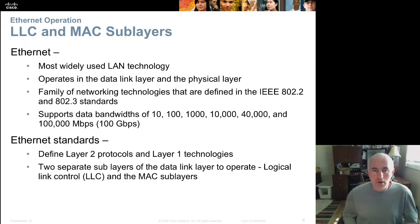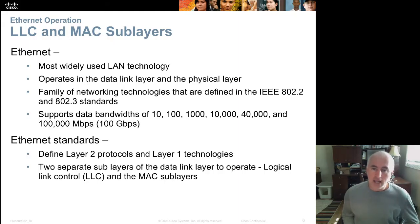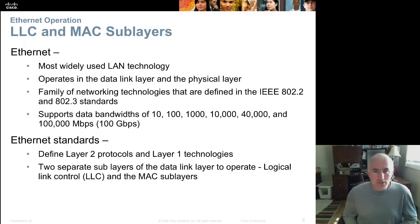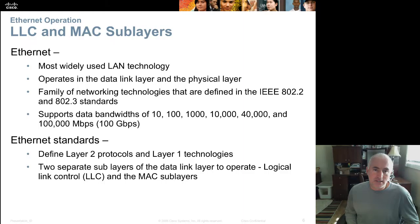The Ethernet protocol is the most widely used LAN protocol today, operating at Layer 2 and Layer 1 of the OSI model. It's in a family of network protocols defined by the 802.2 and 802.3 standards. Additionally, we have 802.11, which is our wireless Ethernet, but we're specifically talking mostly about 802.2 and 802.3 today, although we will touch on wireless.